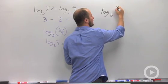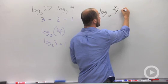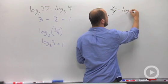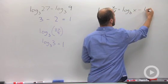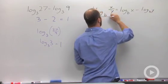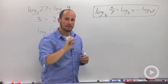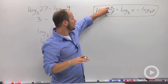we have log base b of x over y—this is going to be equal to log base b of x minus log base b of y. This is the quotient rule of logarithms. Basically, whatever's in the top is going to go first,